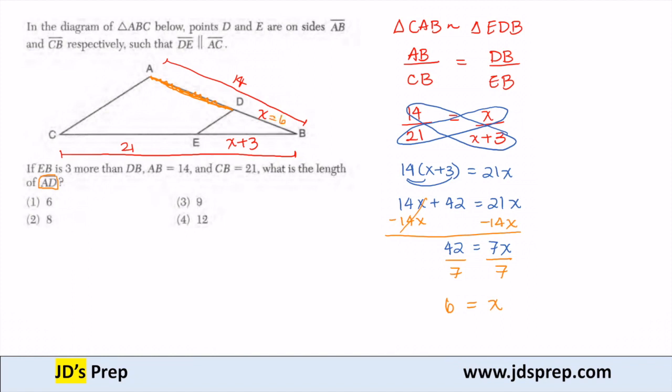I know that the whole length AB is 14, and AB is really AD plus DB. We just found that DB equals 6. So with simple arithmetic, I subtract 6, and what we really want, AD, equals 8. So our solution here is number 2.